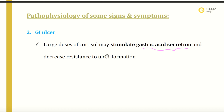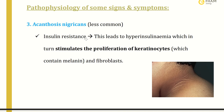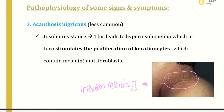The third sign is acanthosis nigricans, characterized by dark hyperpigmented patches. This indicates insulin resistance in the patient. As discussed, insulin resistance leads to hyperinsulinemia because the pancreas is stimulated more and more to produce insulin to enable glucose uptake by cells. Hyperinsulinemia in turn stimulates the proliferation of keratinocytes — which contain melanin, causing the darkness — and also stimulates proliferation of fibroblasts, resulting in this condition.